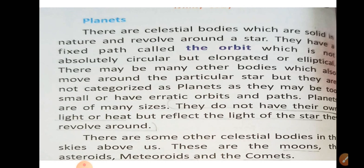Planets are of many sizes, which you will get to know about in this video. Planets do not have their own light or heat, but they reflect the light of the stars they revolve around. They shine by reflecting that light — they don't have their own light or heat.